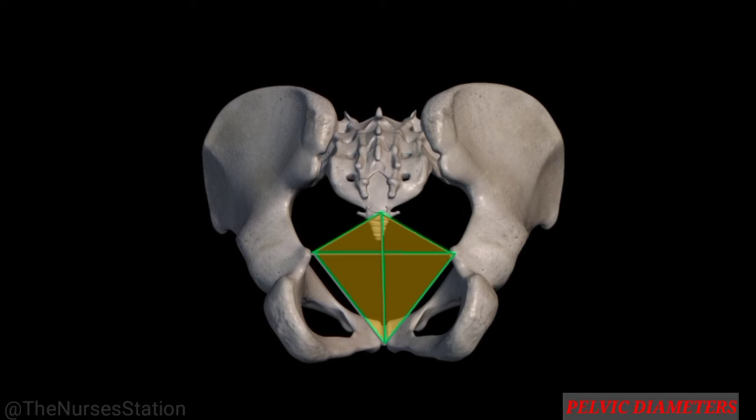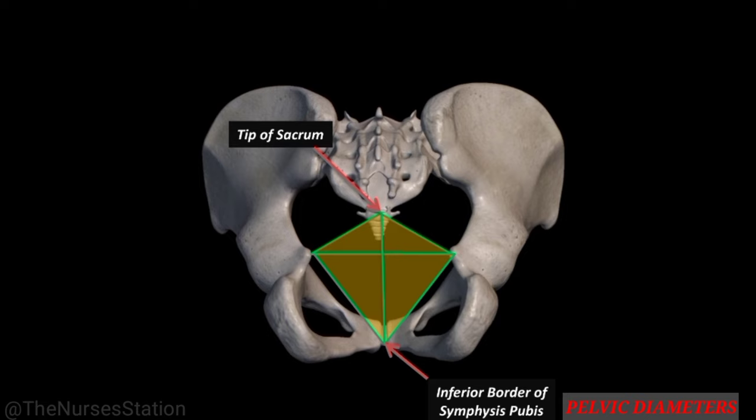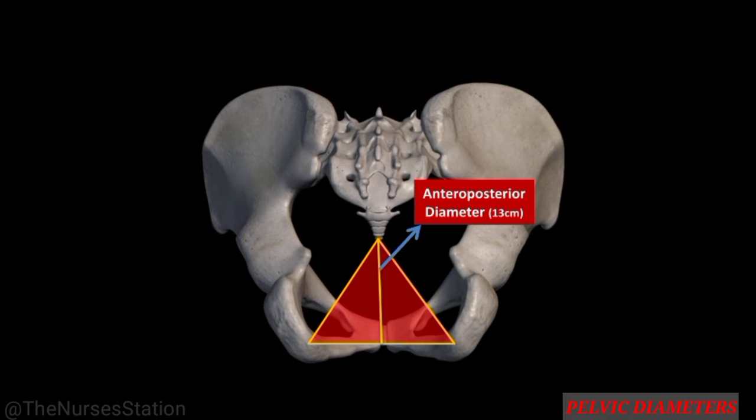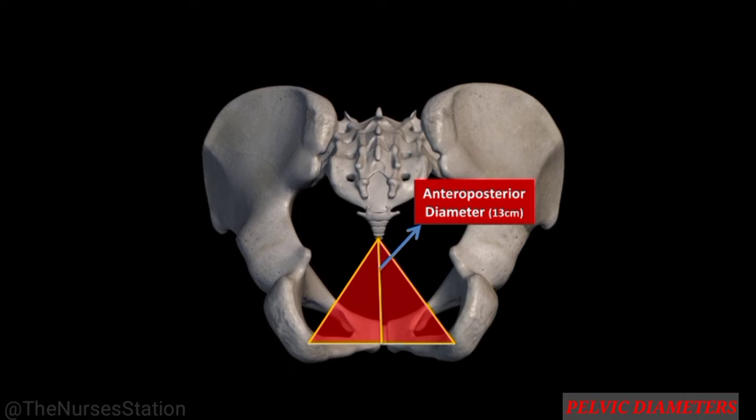The outlet has an obstetric outlet and an anatomical outlet. The obstetric outlet is anteroposteriorly oval-shaped; its anterior-posterior diameter extends from the inferior border of the symphysis pubis to the tip of the sacrum and measures about 11 centimeters. The transverse diameter, also called the bispinous diameter, measures between the two ischial spines and is 10.5 centimeters. For the anatomical outlet, the anterior-posterior diameter extends from the lower border of the symphysis pubis to the tip of the coccyx and is 13 centimeters; the transverse or intertuberous diameter measures between the inner borders of the ischial tuberosities and is 11 centimeters.